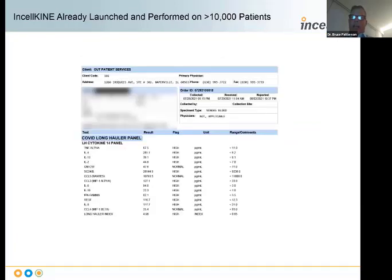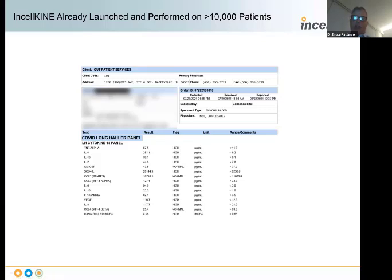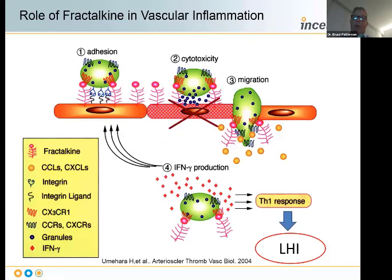When we looked at all the data from this panel early on, we noticed that there is this marker called soluble CD40 ligand, VEGF, and CCL5, which really formed the triad of vascular inflammation, as these markers are made by inflammatory endothelial cells and activated platelets. This was happening in patients with positive long hauler indices greater than 0.7.